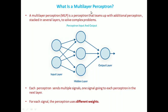In this lecture we will be discussing about what is a multi-layer perceptron. A multi-layer perceptron, also called as MLP, is a perceptron which teams up with additional perceptrons stacked under several layers to solve complex problems. In the diagram here, this is a multi-layer perceptron having three layers: the input layer as the first layer, the hidden layer as the second layer, and the output layer as the third layer.